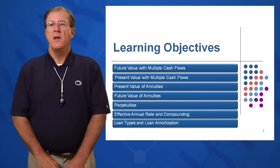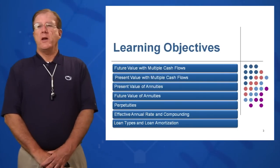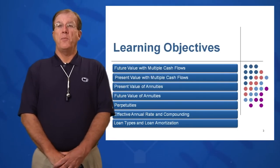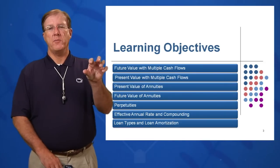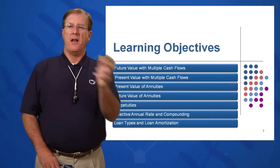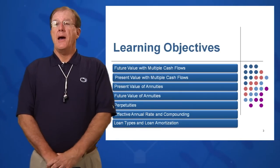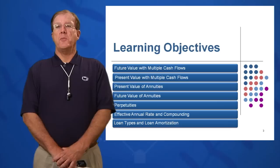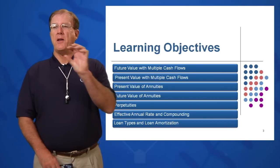Lots of learning objectives in this chapter. Seven to be specific. We're going to look at the future value with multiple cash flows. So in session five we only have one cash flow, one lump sum, and we were discounting it and compounding it. Now we're going to have several cash flows and how do we handle them? We're going to look at present value with multiple cash flows, present value of an annuity. So again, annuities, same amount each period.